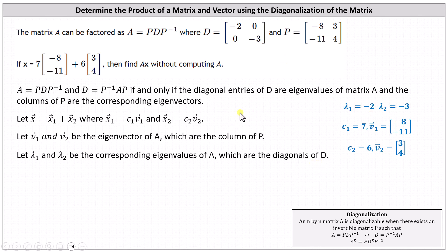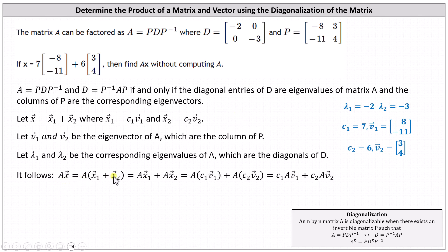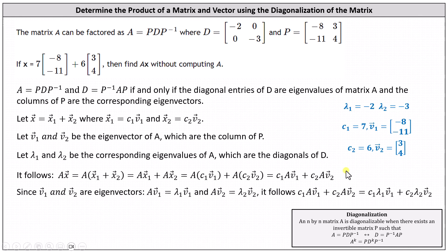Now consider matrix A times vector X. We can say that matrix A times vector X equals A times the sum of vectors X1 and X2, which equals A times vector X1 plus A times vector X2. Performing substitution, this equals A times the product of C1 and vector V1, plus A times the product of C2 and vector V2, which equals C1 times A times vector V1 plus C2 times A times vector V2. Since V1 and V2 are eigenvectors, A times vector V1 equals lambda 1 times vector V1, and A times vector V2 equals lambda 2 times vector V2. Therefore, C1 times A times vector V1 plus C2 times A times vector V2 equals C1 times lambda 1 times vector V1 plus C2 times lambda 2 times vector V2.